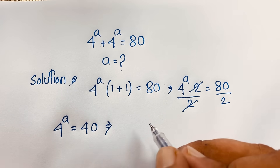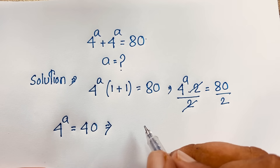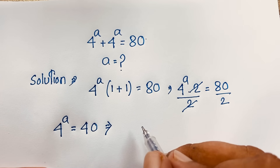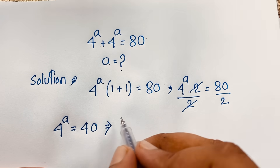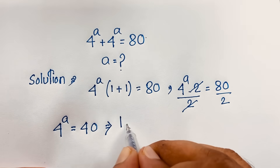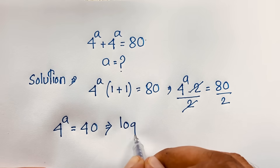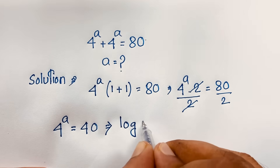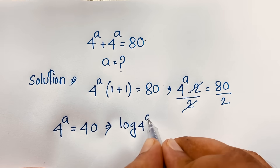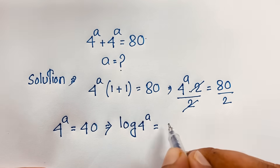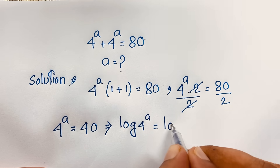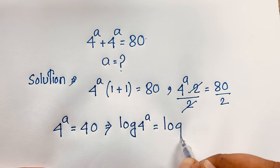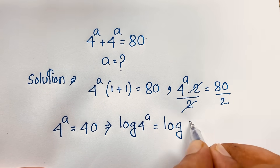Now at this point I apply the natural log to both sides, so log of 4 to the power a is equal to log of 40.